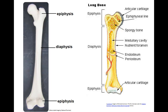Periosteum is a fibrous connective tissue that covers the bone everywhere except where there is articular cartilage. It is through the nutrient foramens that blood vessels pass to transport nutrients from the outside through the periosteum to the inside of the bone. The diaphysis of the long bone consists primarily of compact bone, and the epiphyses consist mostly of spongy bone.